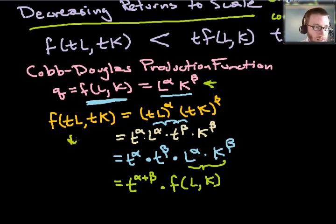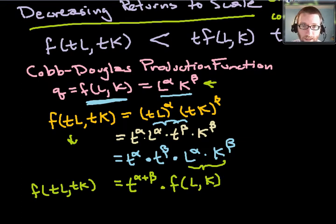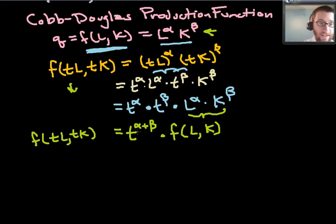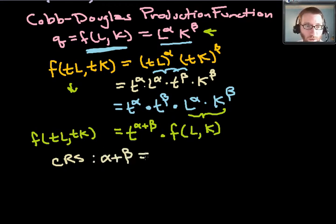And so now I have a statement that f of tL, tK, so I have scaled up my inputs, that yields an output that is either scaled up or scaled down. The question is does a Cobb-Douglas production function exhibit constant returns to scale or increasing returns to scale or decreasing returns to scale? Well it exhibits constant returns to scale when alpha plus beta equals one. When alpha plus beta equals one then my firm has constant returns to scale.